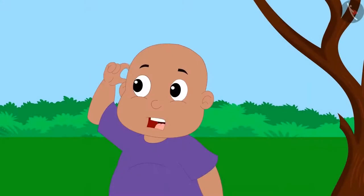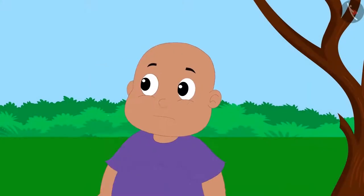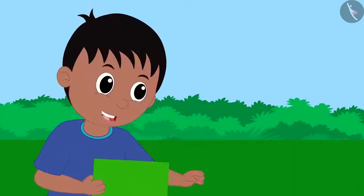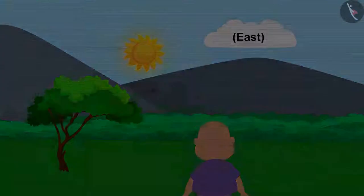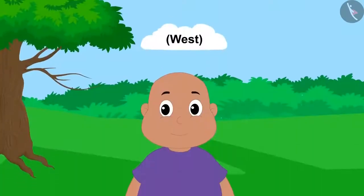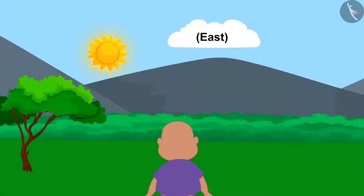But how are we supposed to recognize these directions? Now confused, Bablu asks Raju. This is very easy. Suppose you are looking at the direction where the sun rises. So you are looking towards the east direction. West will be towards your back. South would be towards your right hand, and north would be towards your left hand.